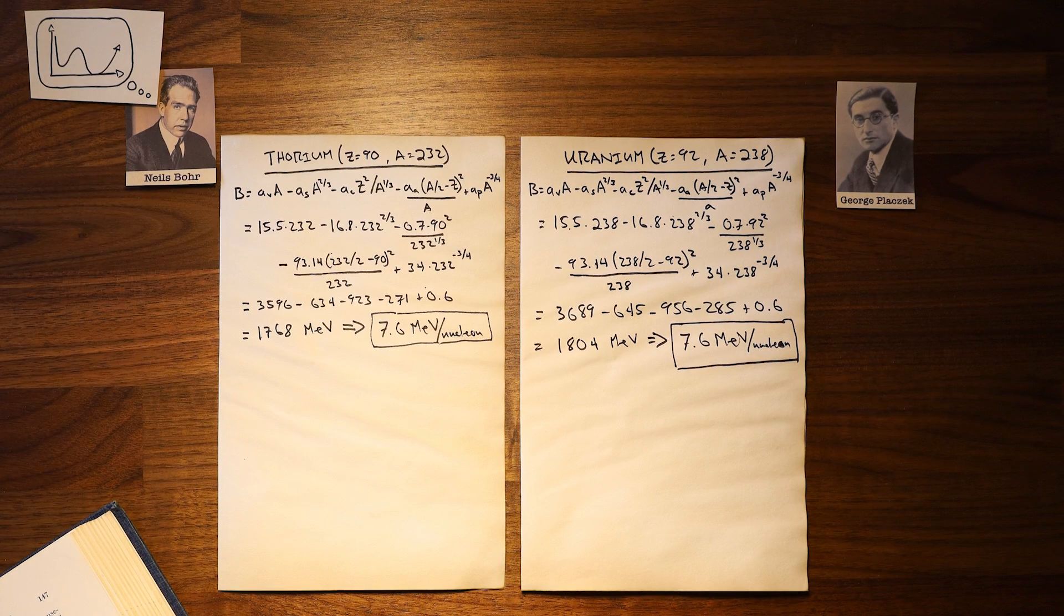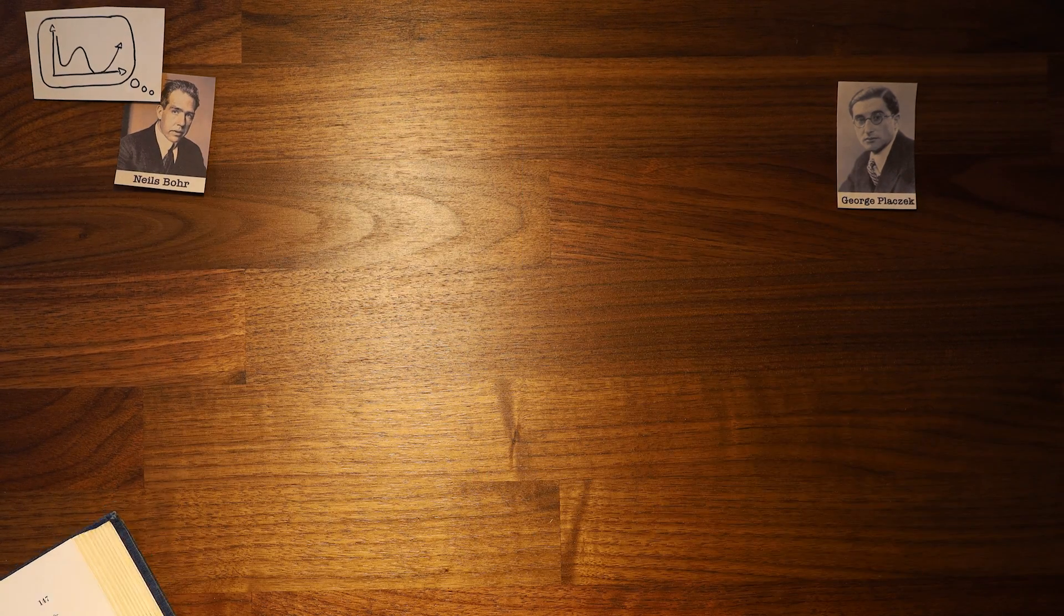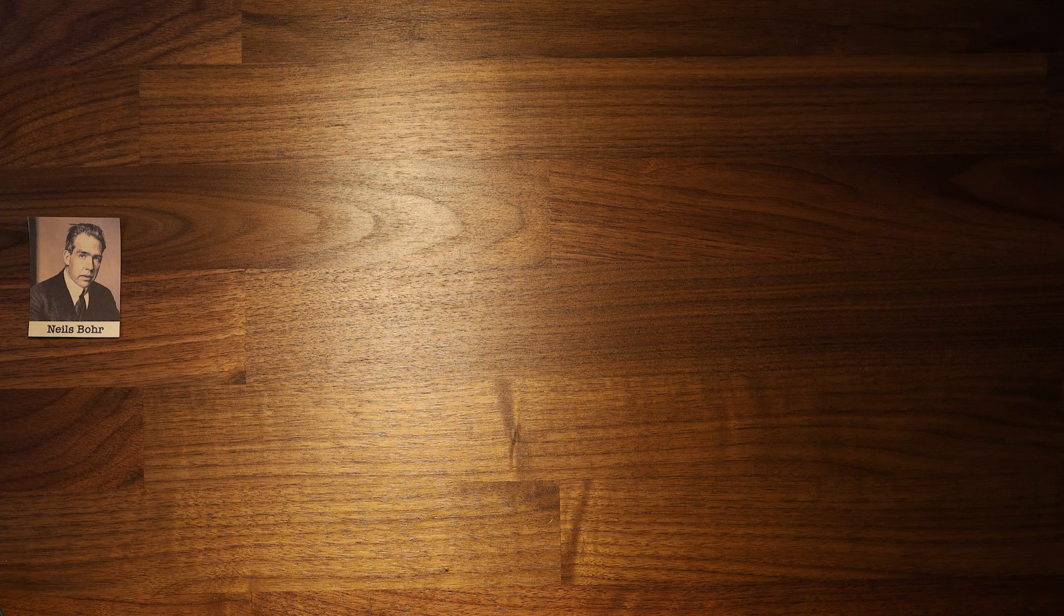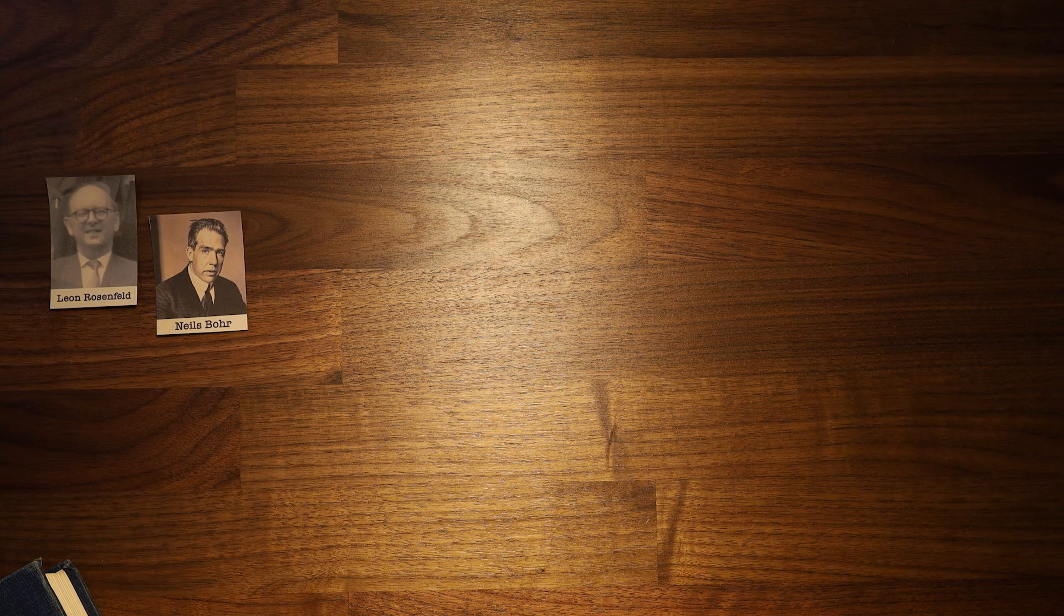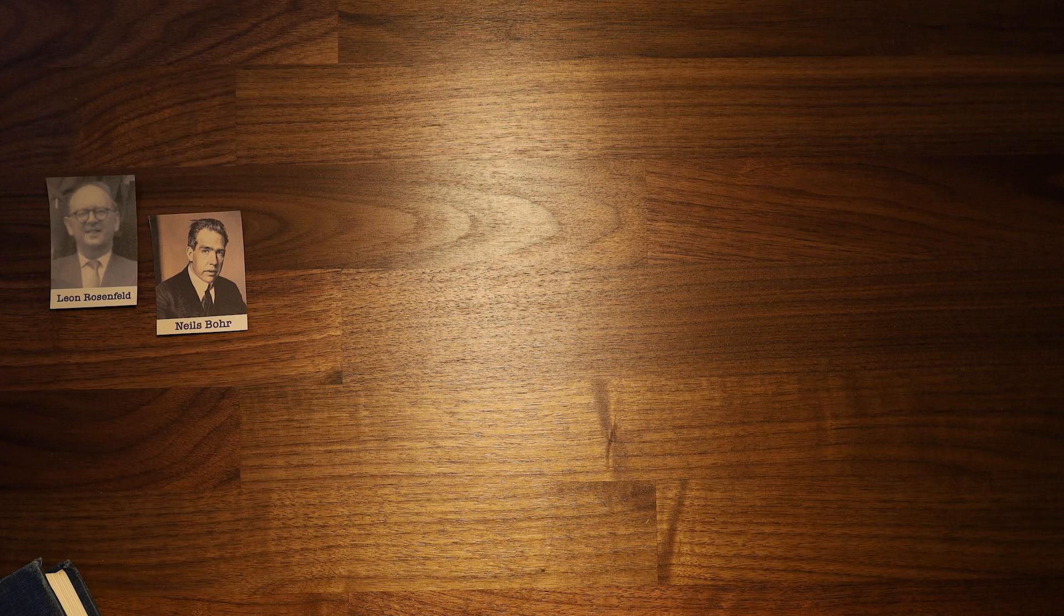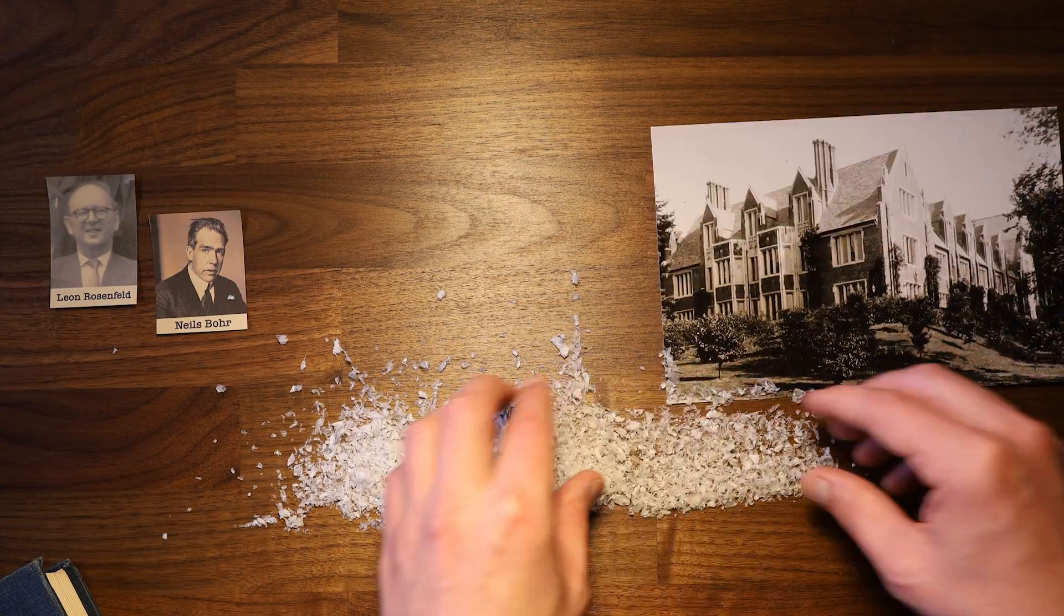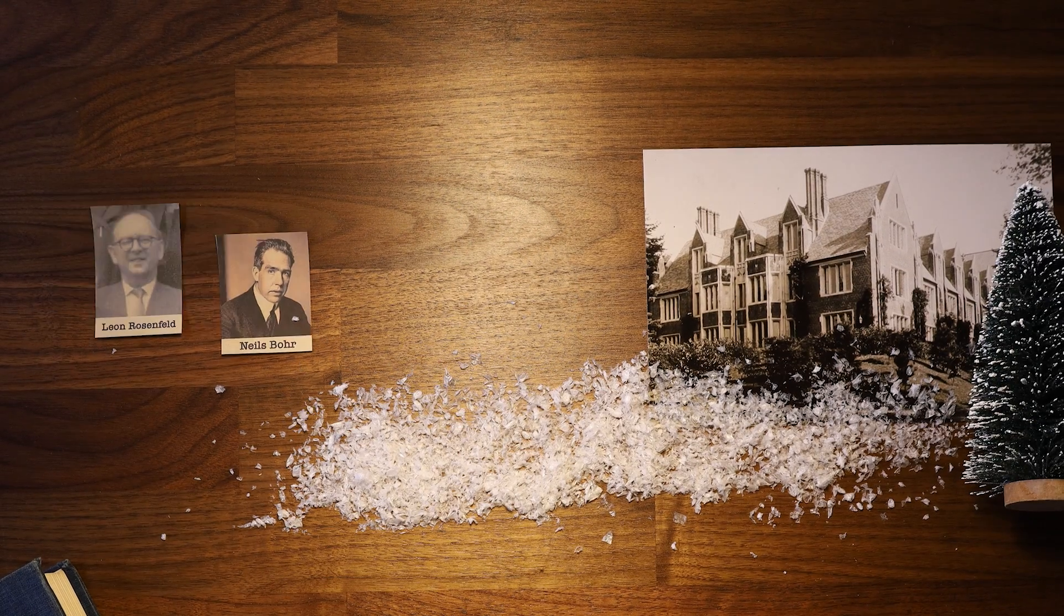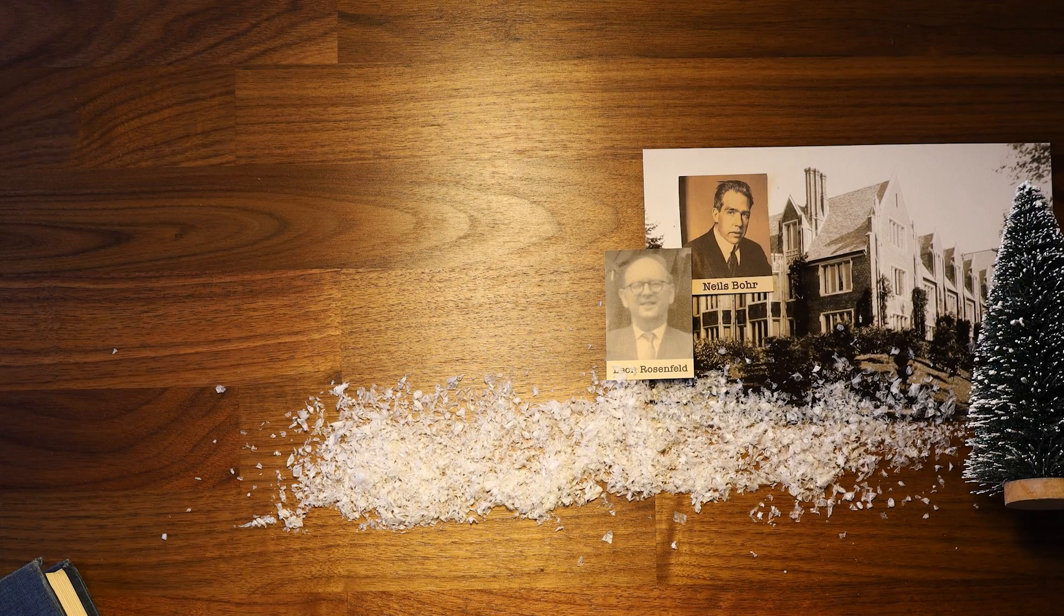As Plachek continued, a fragment of a solution came to Bohr. At risk of losing it, Bohr stood up and quickly left without saying a word. Sensing Bohr may be onto something, the physicist Leon Rosenfeld followed him out, careful not to disturb his concentration. Bohr trudged through the snow in silence to the Institute for Advanced Study where he was borrowing Einstein's office.